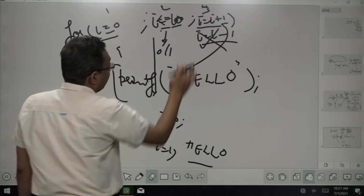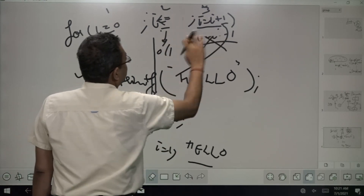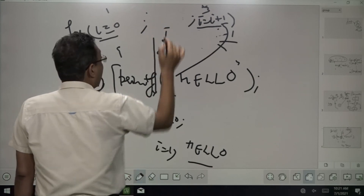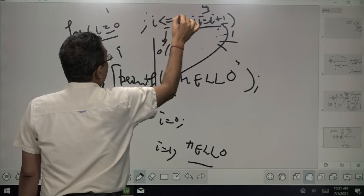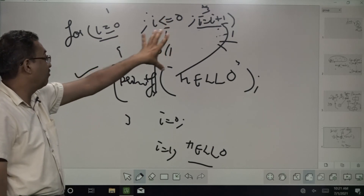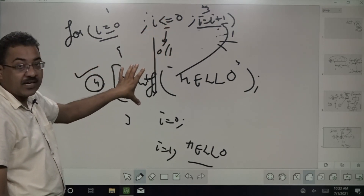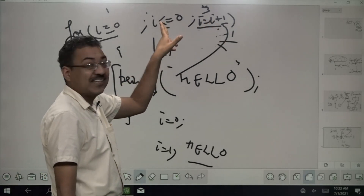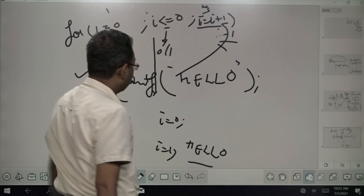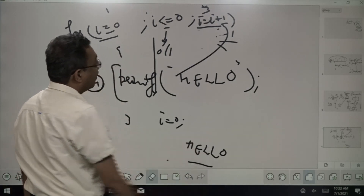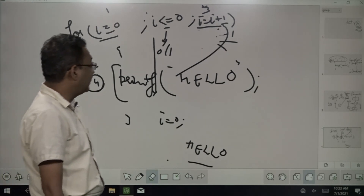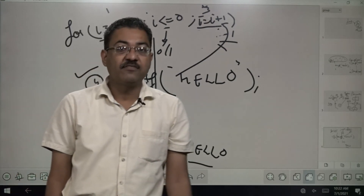Instead of that, keeping everything else the same, if I write the condition as i less than or equal to 0: i equals 0, then 0 is less than or equal to 0 — yes, that is true — so printf will work once. Then i's value becomes 1, and 1 is less than 0 — that is false — so it will not work. It will take you out of the loop, so it will work only one time and the result will be a single hello. I hope using this very simple example, I am able to clarify the concept of the for loop.